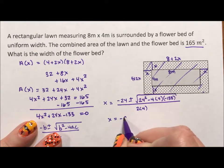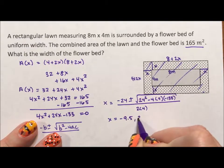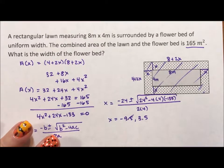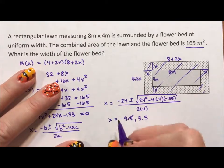The answers I get are negative 9.5 and 3.5. Well, this doesn't make sense. A negative measurement makes no sense in the real world, which means 3.5 has to be the correct answer.